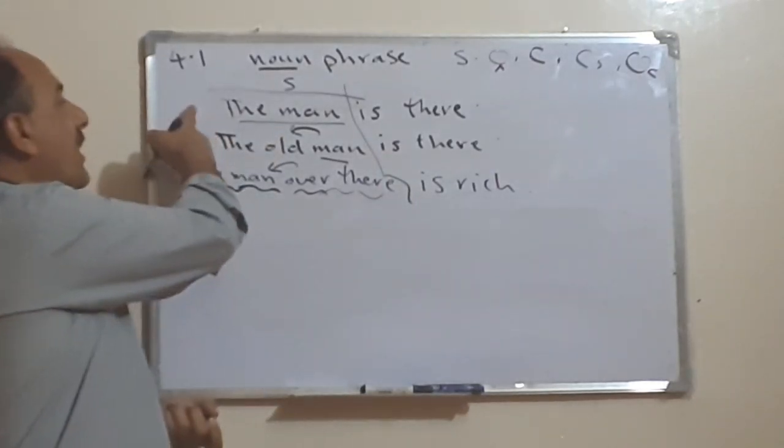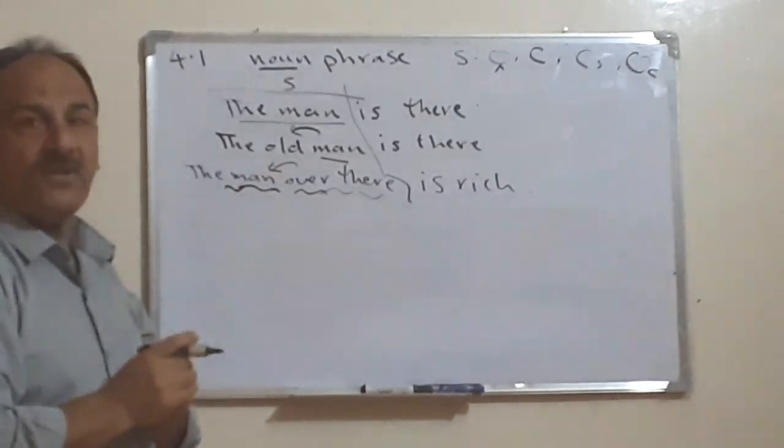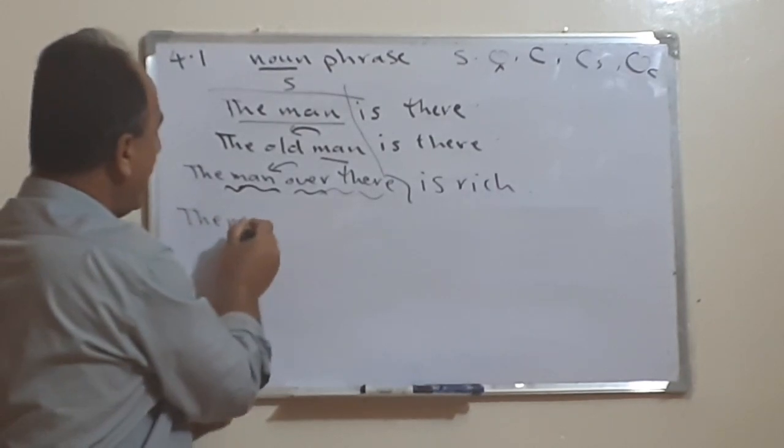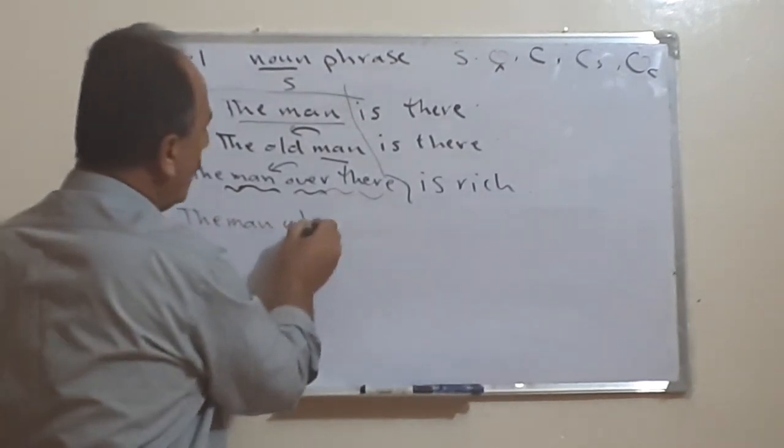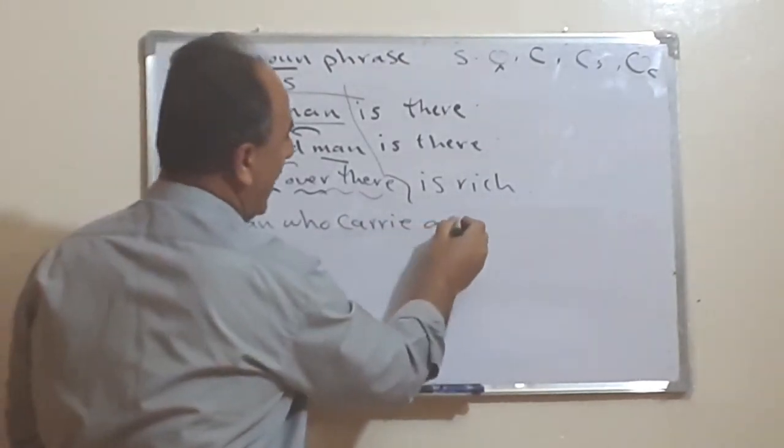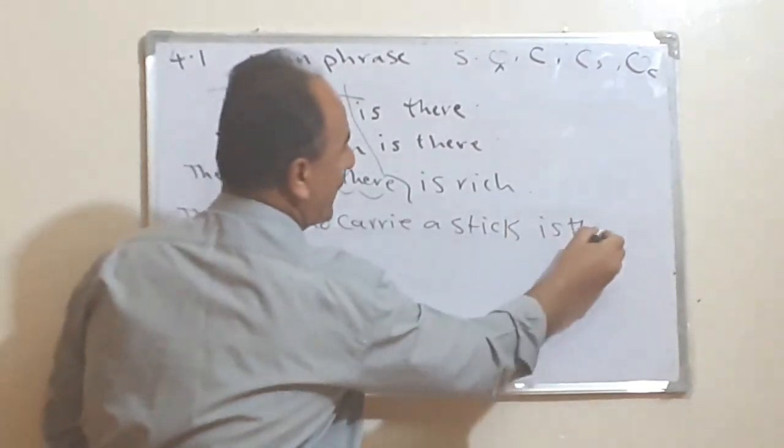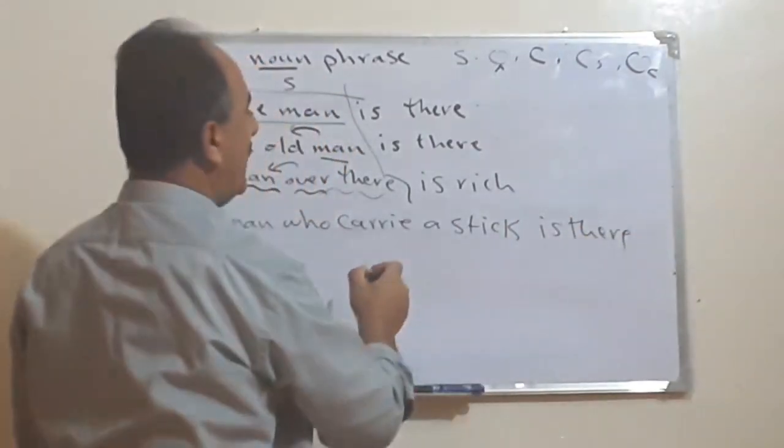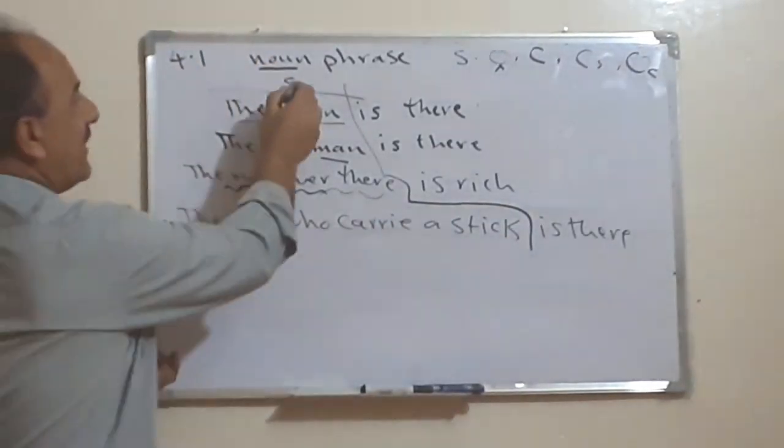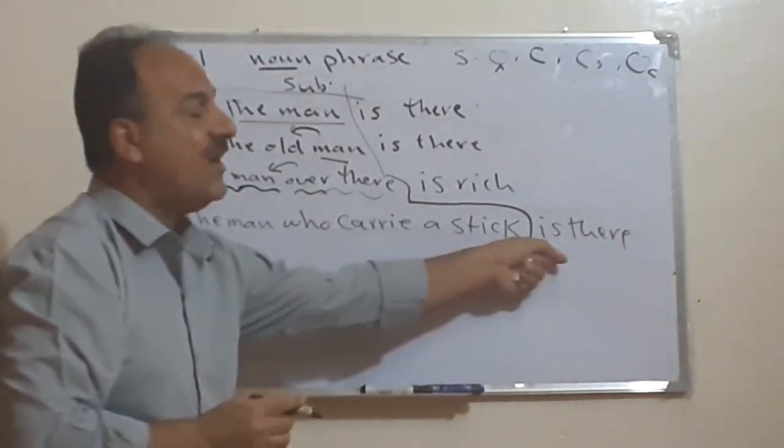Either we have just one word or we have a phrase or even relatives. For example, we say the man who carries a stick is there. What do we have here? All this part is the subject, in the subject position. The man who carries a stick is there.